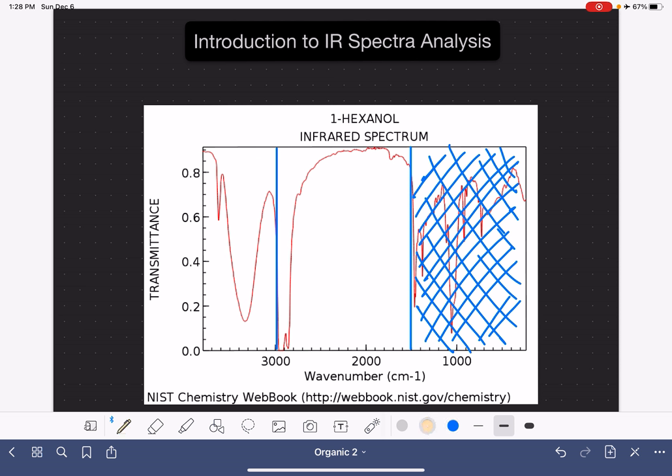This part of the spectrum we refer to as the fingerprint region. It is due to the stretching and bending of single bonds, and our molecules have tons and tons of single bonds. That means that this part of the spectrum is going to have a lot of peaks in it. As you can see, this one had a lot of peaks in it, and it's usually not useful for us to attempt to understand and analyze every single one of those peaks.